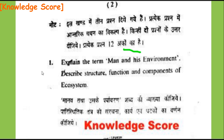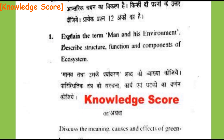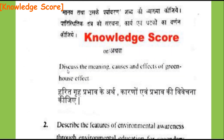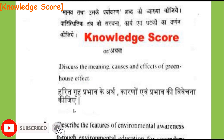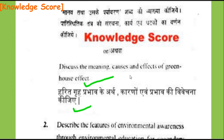Question number 1, Section A: Explain the term 'man and his environment.' Describe the structure, function, and components of ecosystem. OR discuss the meaning, causes, and effects of greenhouse effect. Harit griya prabhav ke arth, karanon aur prabhav ki vyakhya kijiye.